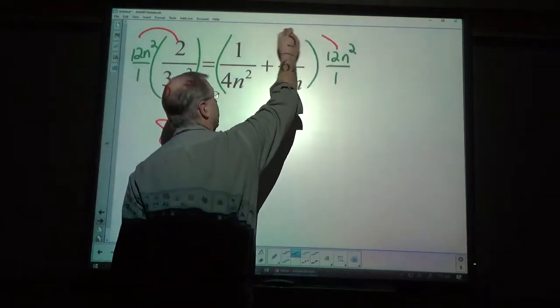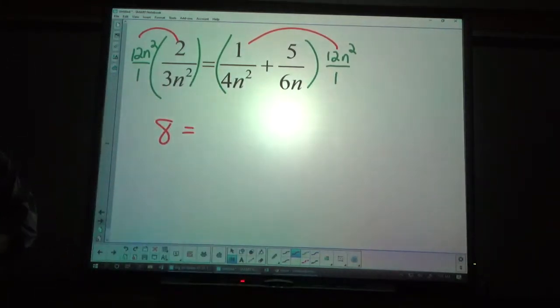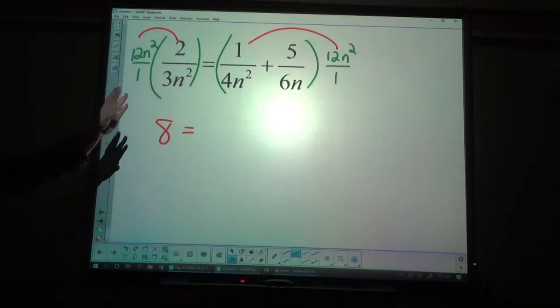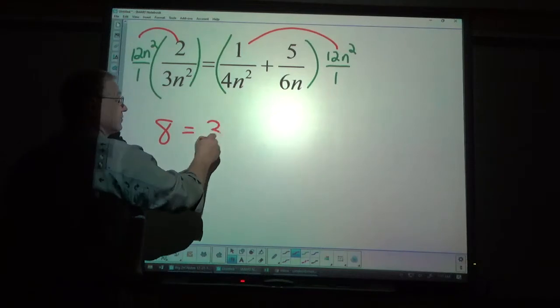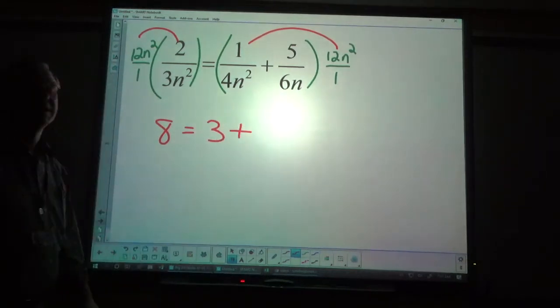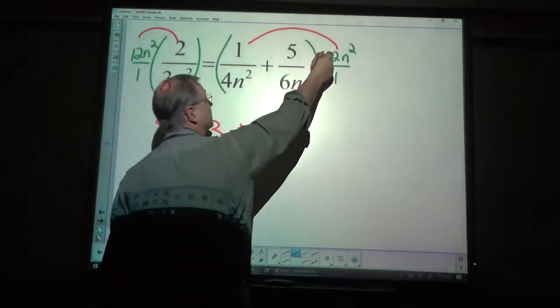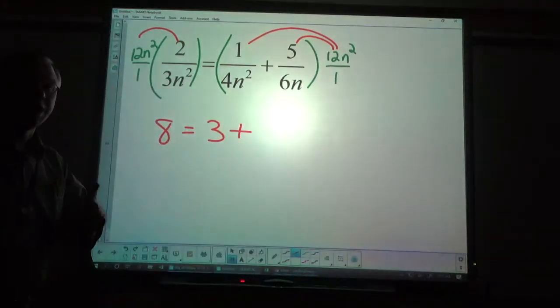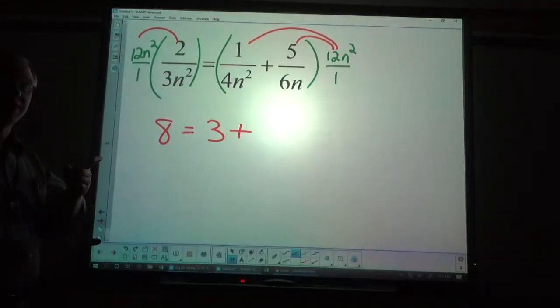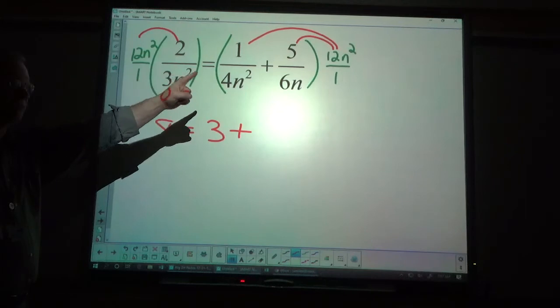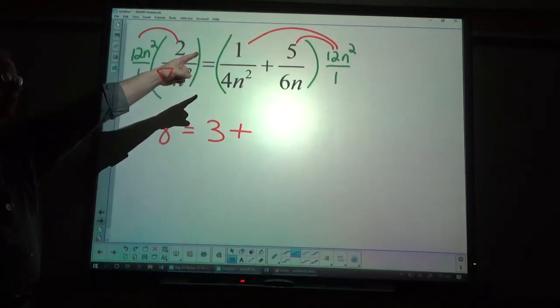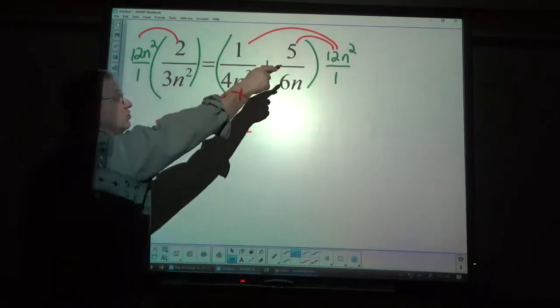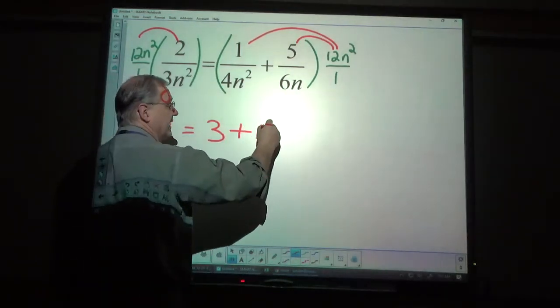When I distribute here, again, n squared completely cancels out. 4 and 12 reduce to 3 and 1. 1 times 3 is 3. And, finally, when I distribute here, one of the n's will cancel out. The other will still be there up top. 6 and 12 reduce to 1 and 2. So, that's a 2n times 5, or 10n.